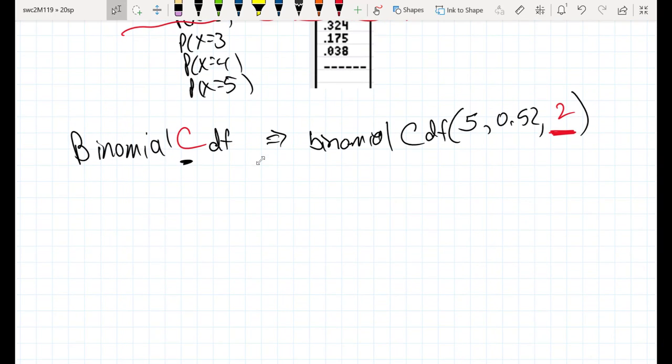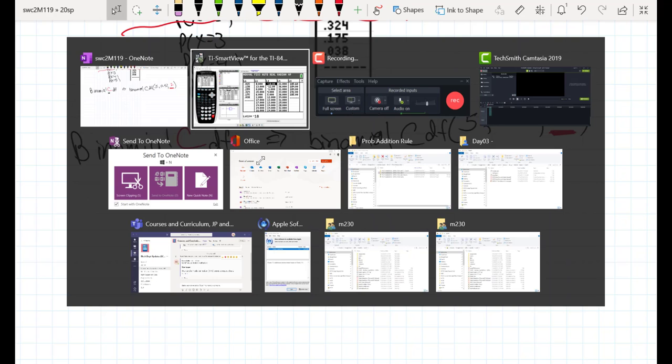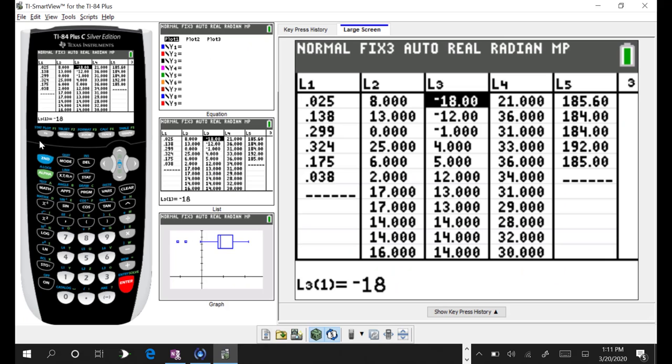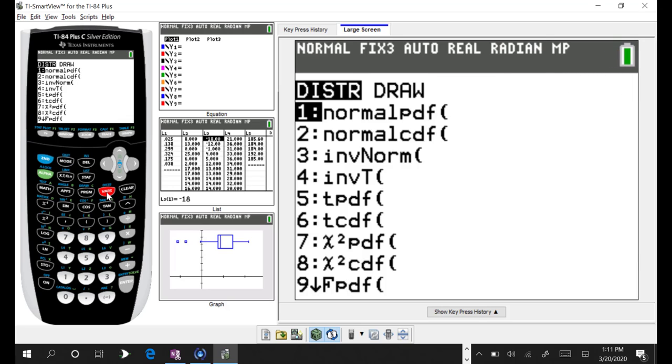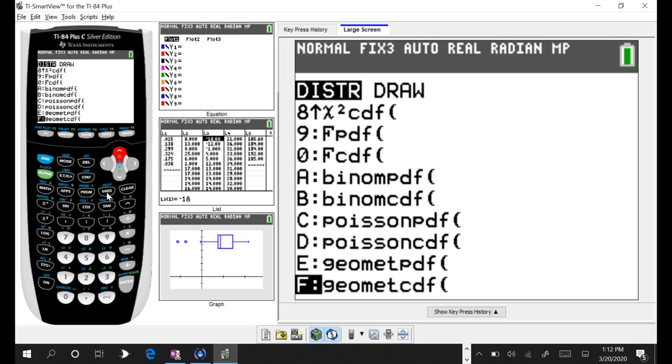And if we do this, let's see if we get the exact same answer that we would have gotten had we not done the sum, but just did it at one particular value. So let me do a second quit, get out of this, and then let's go second distribution, scroll up, and let's go to, not PDF, but C as in surely, cumulative.